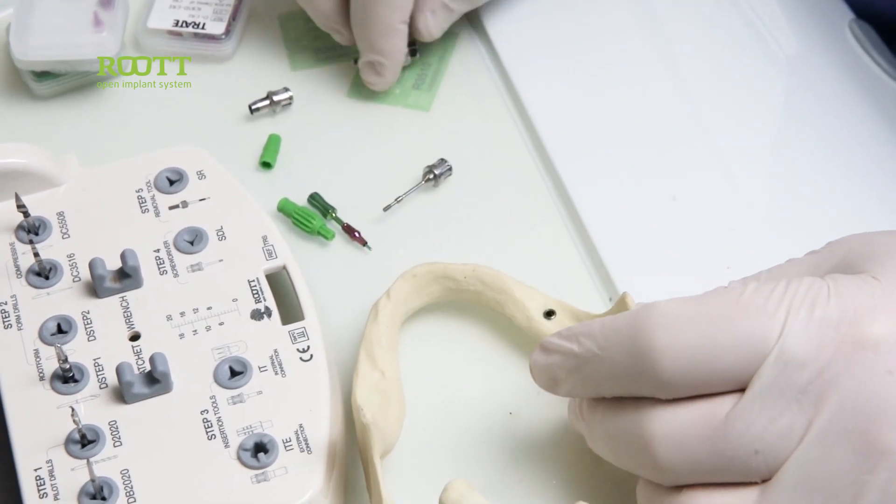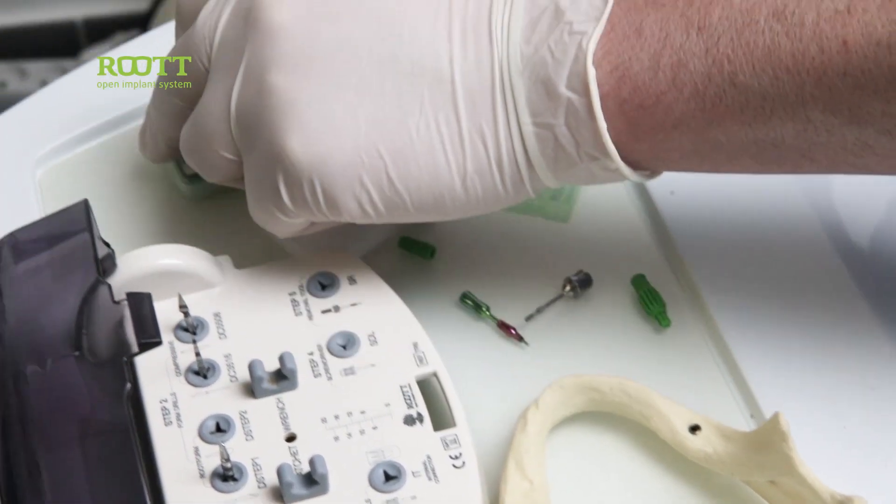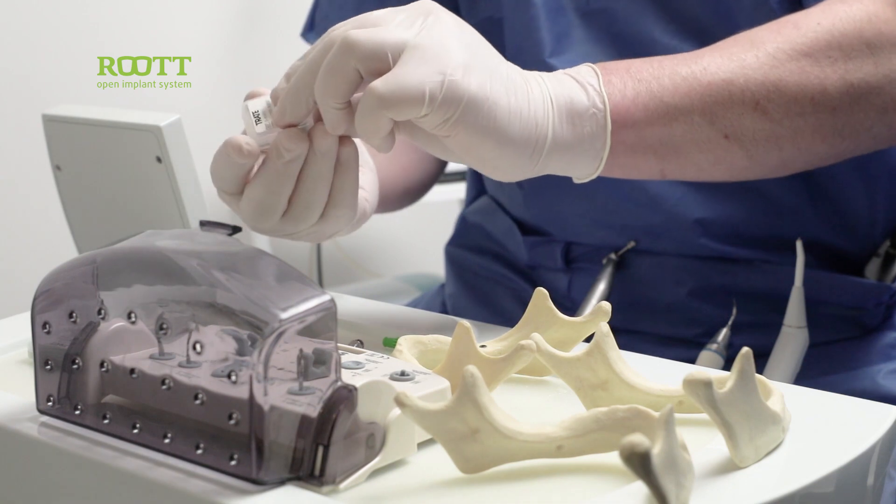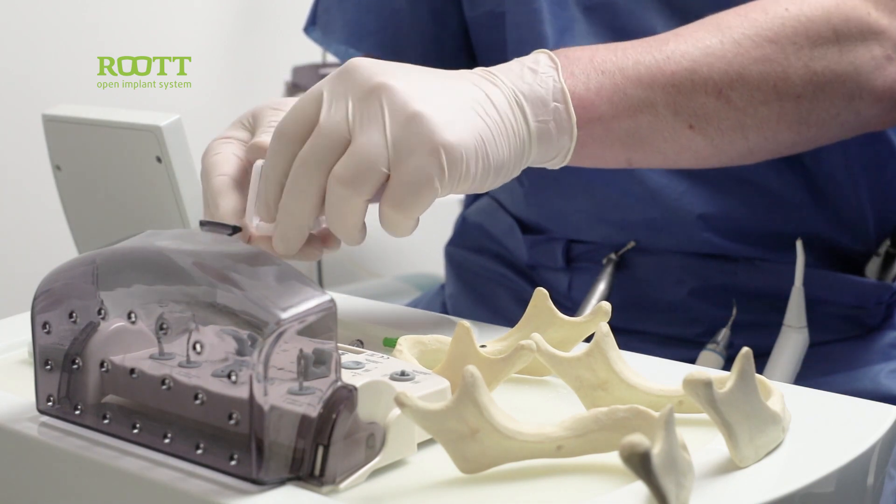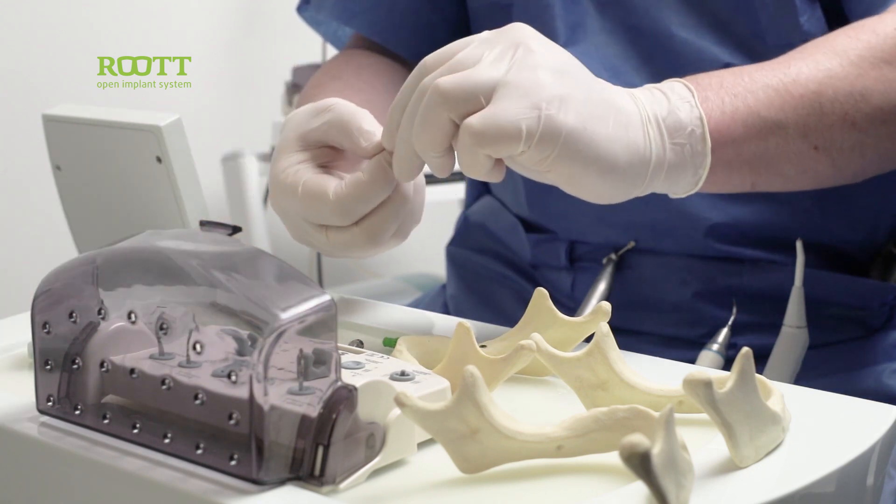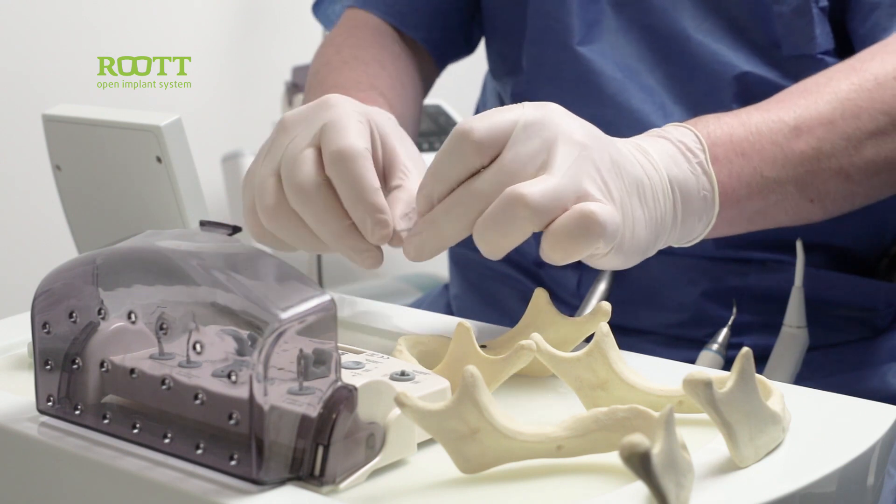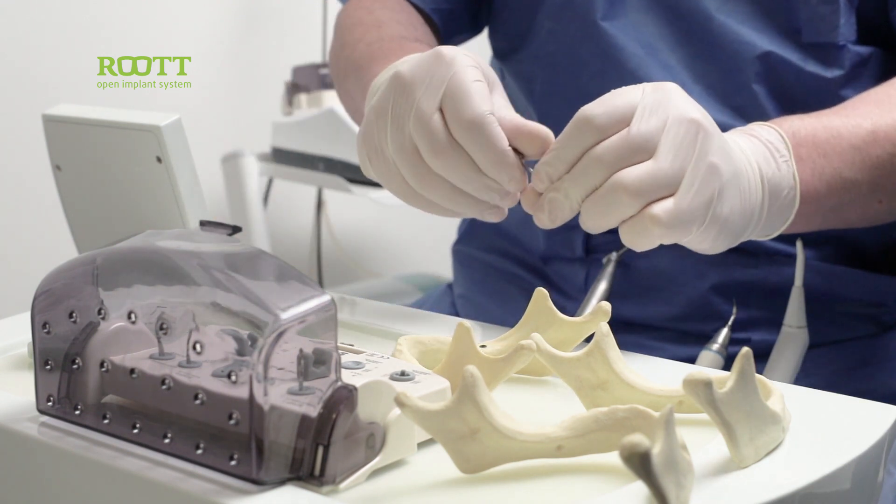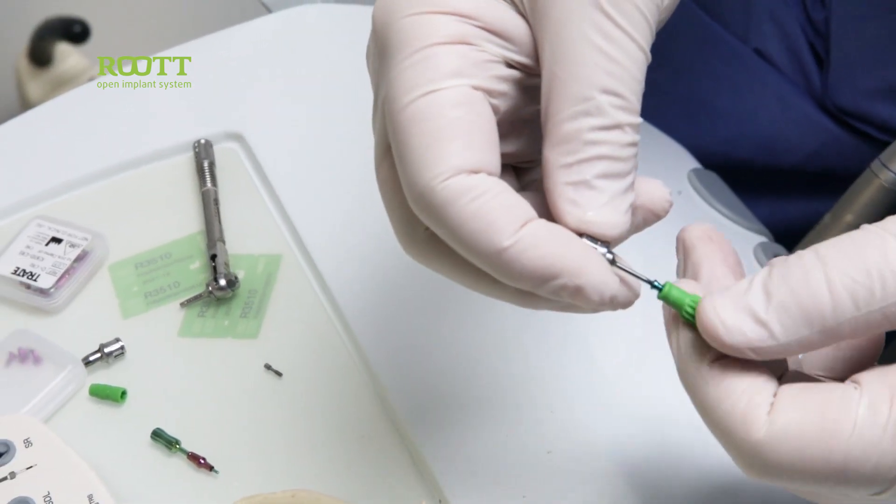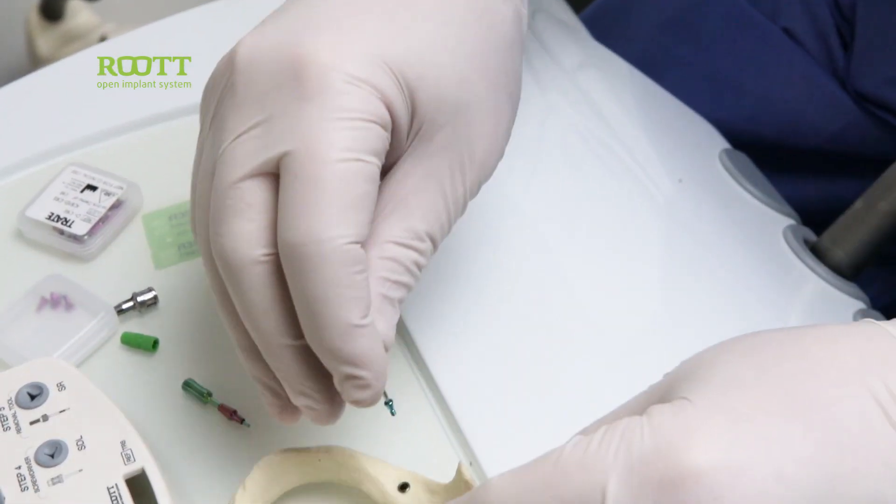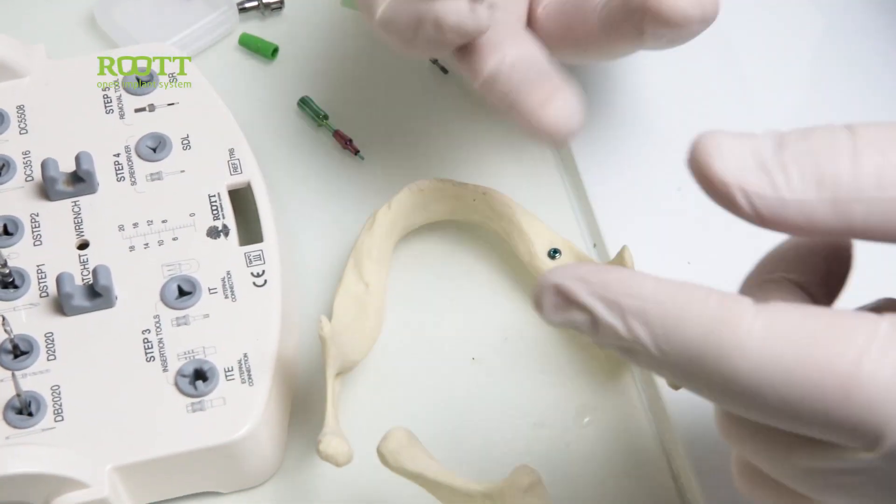This way, we can put our screw, covering screw. The covering screw is usually in the top of the implant holder. Take it out and we screw to cover the implant. Then we make our switches.